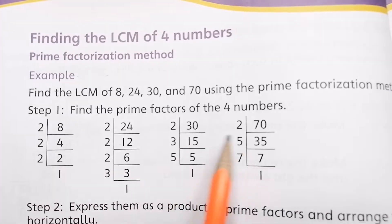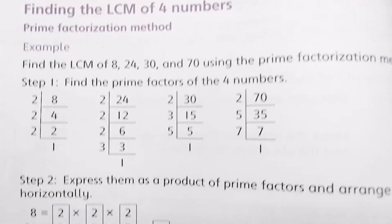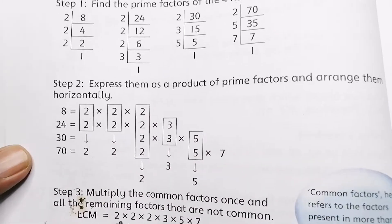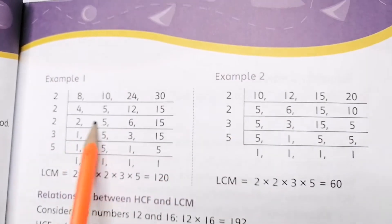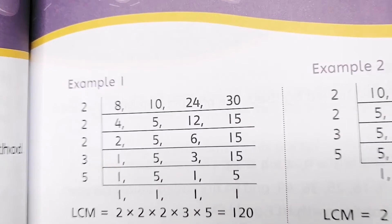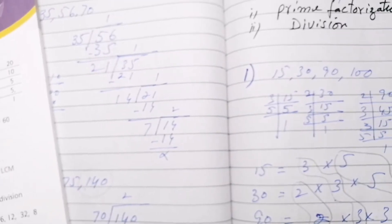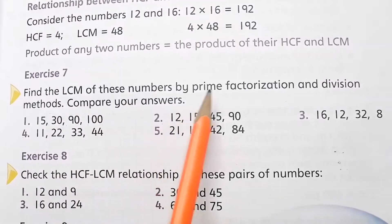For LCM by prime factorization, take separate factors, divide them separately, then take the common numbers and the non-common numbers as well. We write the common numbers first and then take the non-common numbers also. In the division method, numbers like 8, 10, 24, and 30 are divided and you will get the answer 120. Exercise 7 requires you to find LCM of the given numbers by prime factorization method and then by division method, as you can see in your book.